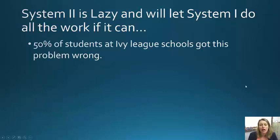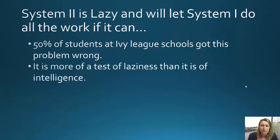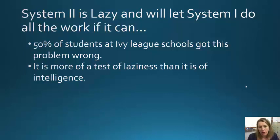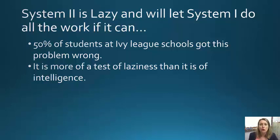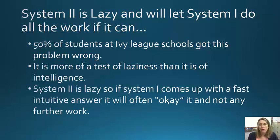50% of students at Ivy League schools got this problem wrong. Obviously, most Ivy League students are pretty intelligent, and they still get the problem wrong. These are pretty easy problems if you take a moment and use System 2. So it's more a test of laziness than intelligence. That's why wisdom and intelligence are two separate factors — people who are good critical thinkers tend to be wise.